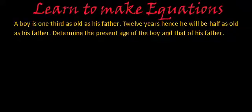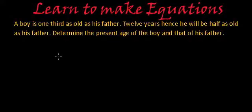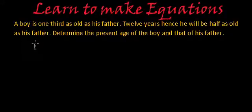I'm going to solve this using two methods. The first method uses one variable, and in the second method we will use two variables, make two simultaneous equations, and then solve them. Now first let's concentrate on the method in which we are going to use only one variable. In this method I'm going to create one table, so let me write father's age.